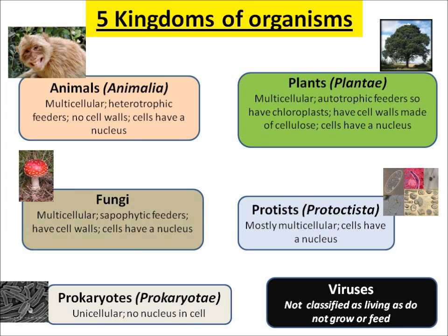Protists are a mixed bunch of organisms — they're mostly multicellular and their cells do have a nucleus. Unlike prokaryotes, like bacteria, which are unicellular — made of one cell — and they have no nucleus; their DNA floats around in the cytoplasm.